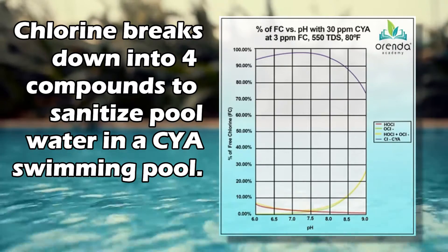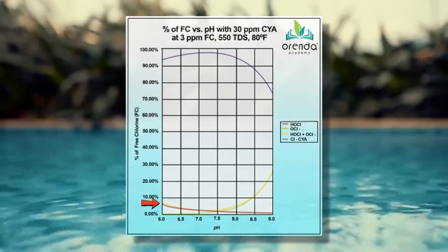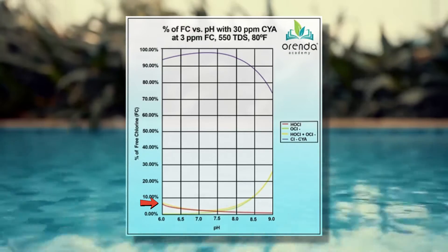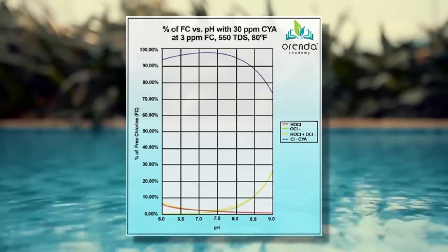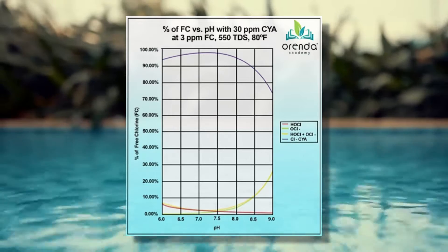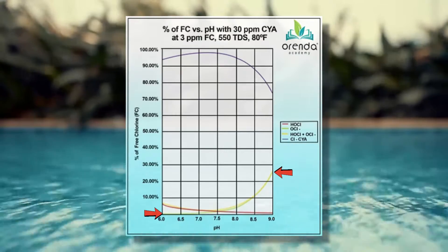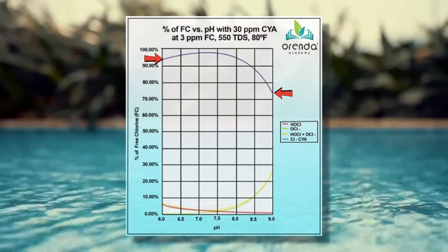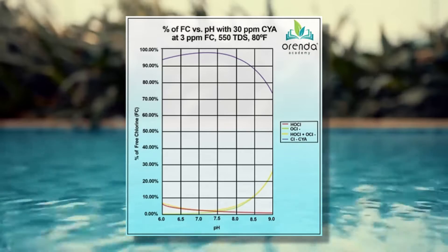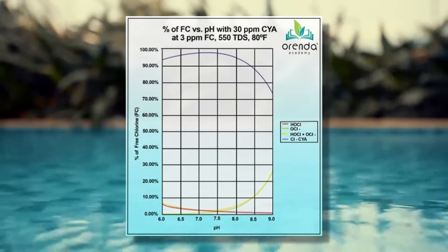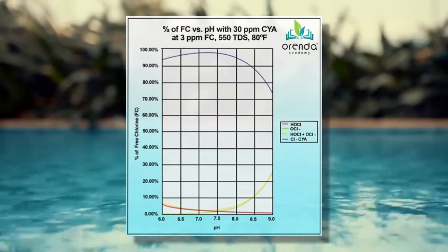Our strongest form of sanitizer is the bottom red line, or hypochlorous acid (HOCl). You can see that as the pH increases across this scale, the percentage of HOCl gradually decreases to essentially nothing — once your pH goes above 8.0, you've lost about 15 to 30% of your strongest sanitizing agent. The weakest sanitizers, or hypochlorites, are represented by the yellow line, which has a direct relationship with the blue line at the top. The blue line represents isocyanurates, or chlorine that has bonded to the CYA present in the pool. As pH rises, the chlorine separates from the CYA and becomes the weaker sanitizing agent.